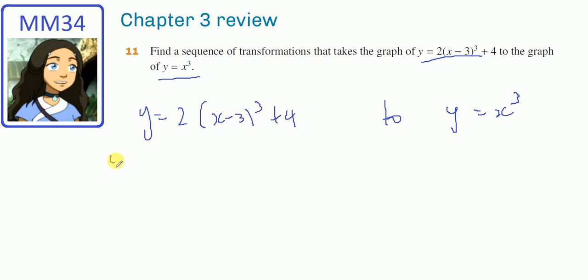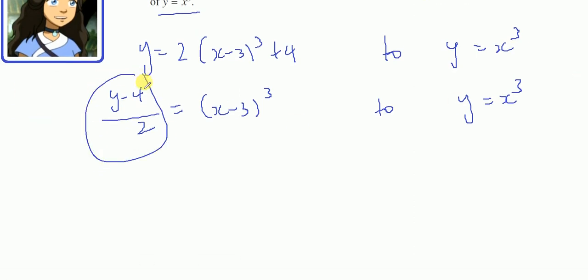So we're going to move the 4 over with the y. y minus 4 divided by 2 is (x minus 3) cubed, and that became y equals x cubed. So y became y, so y minus 4 over 2 became y, and x minus 3 became x.